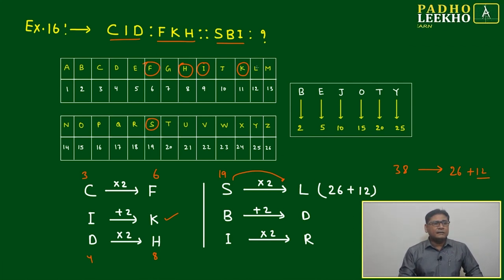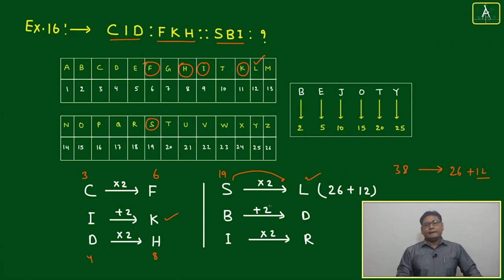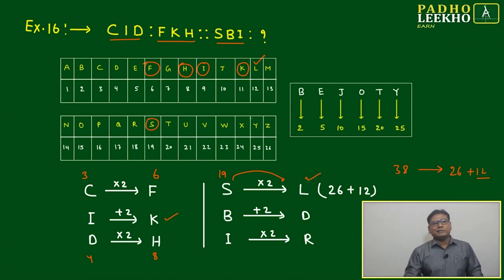And you write L here. This means continuous counting will be there: 26, 27, 28, 29—likewise the Lth will come. It will become the 38th letter.